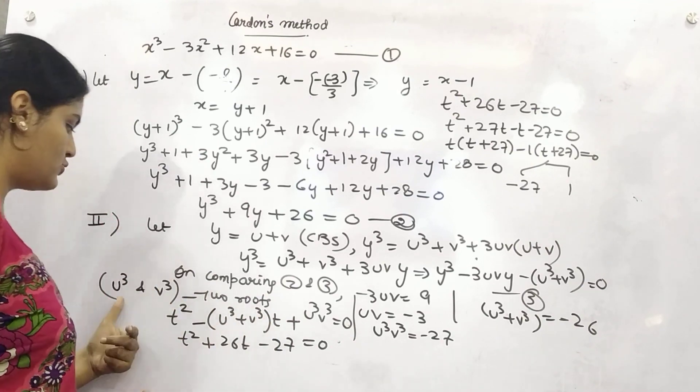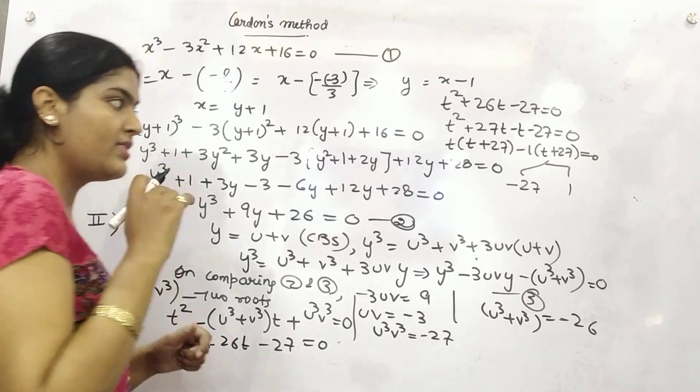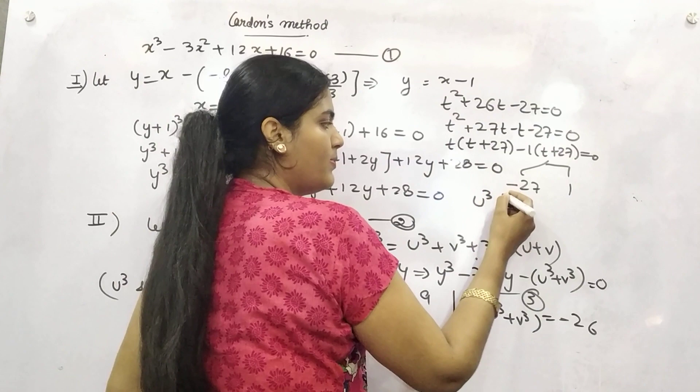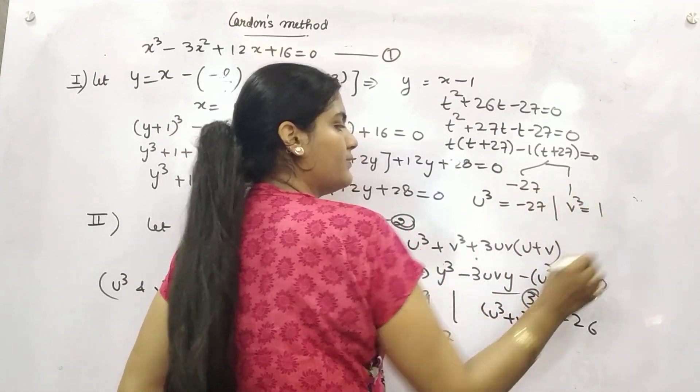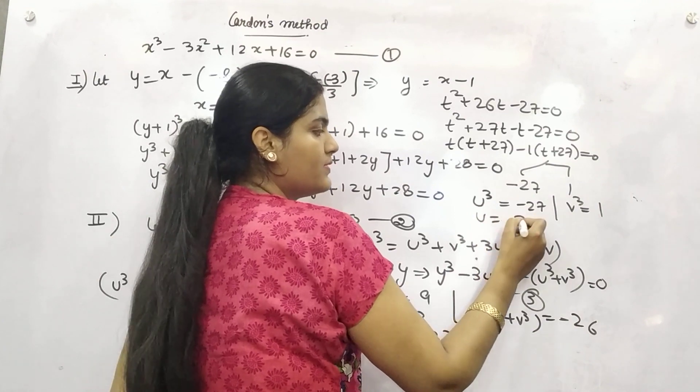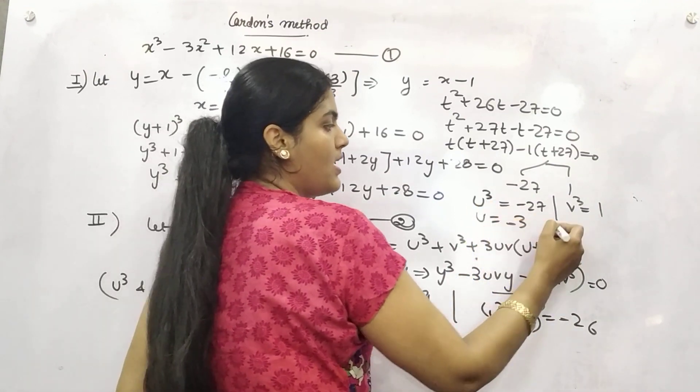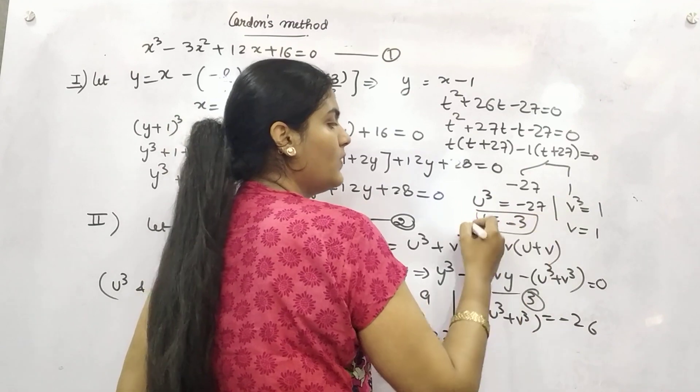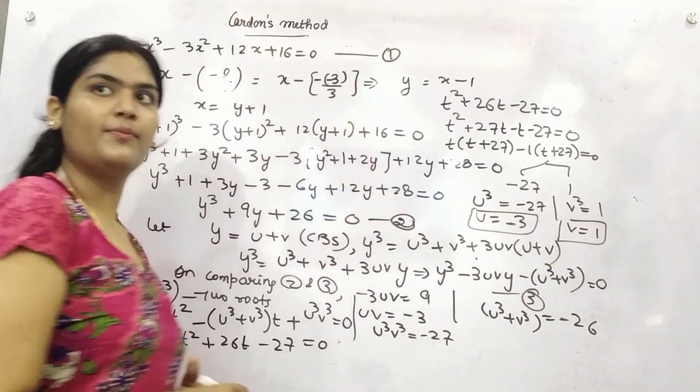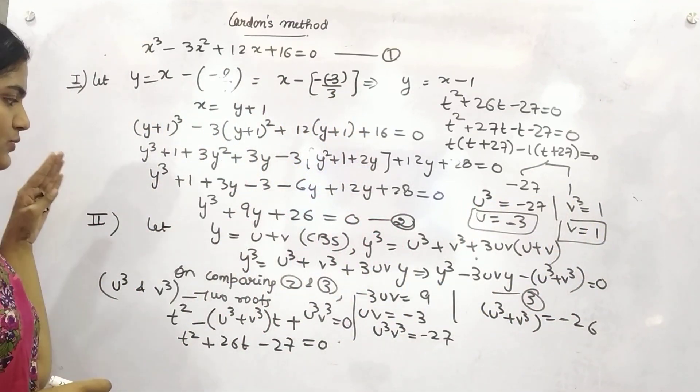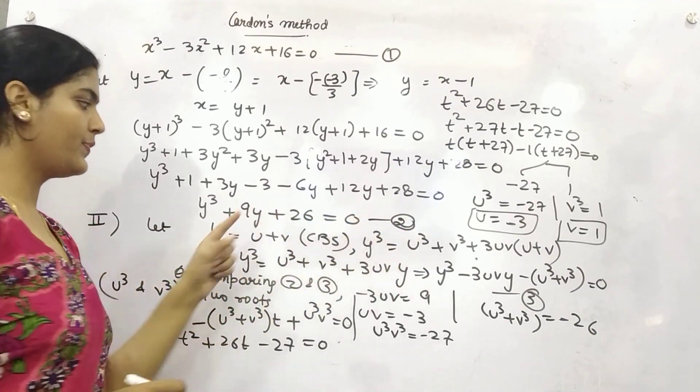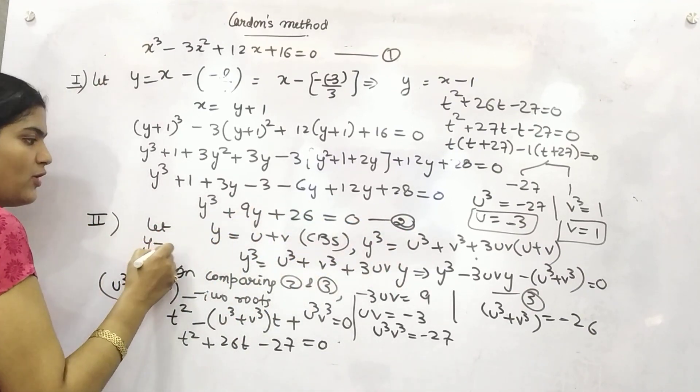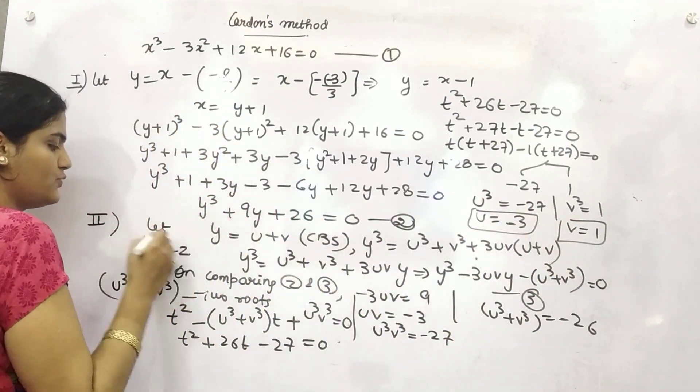And t is nothing but these roots u cube and v cube. That means your u cube, either of these is minus 27 and v cube is 1. So what would be your u? Taking cube root both sides minus 3 and v is 1. You have got your values of u and v. Now take the back root. Your y was u plus v.